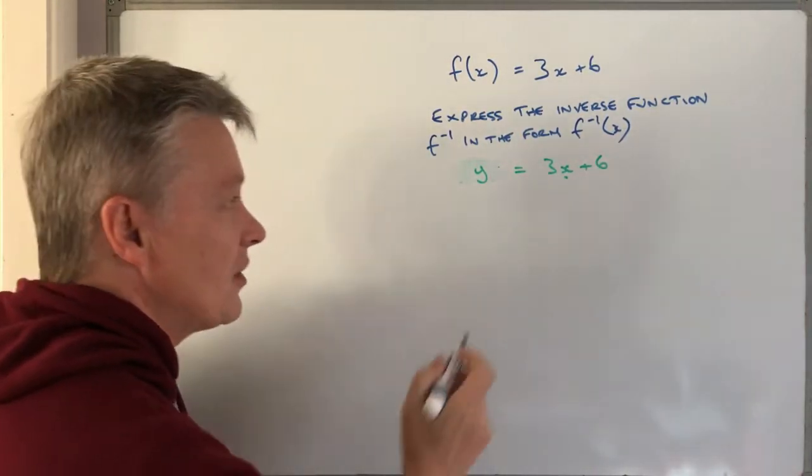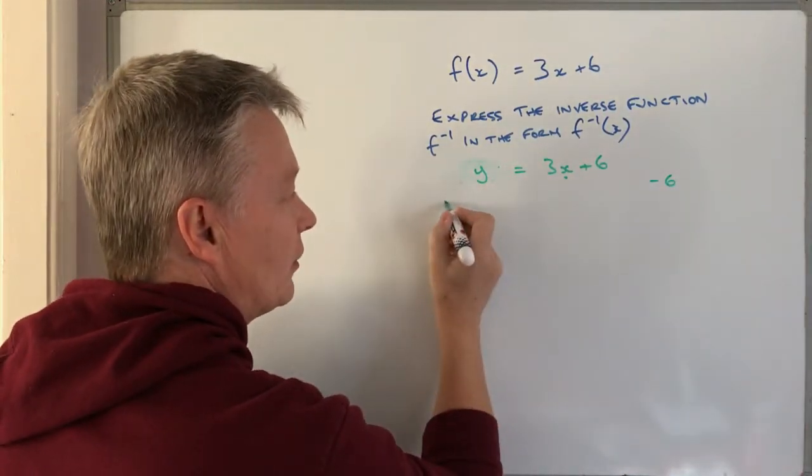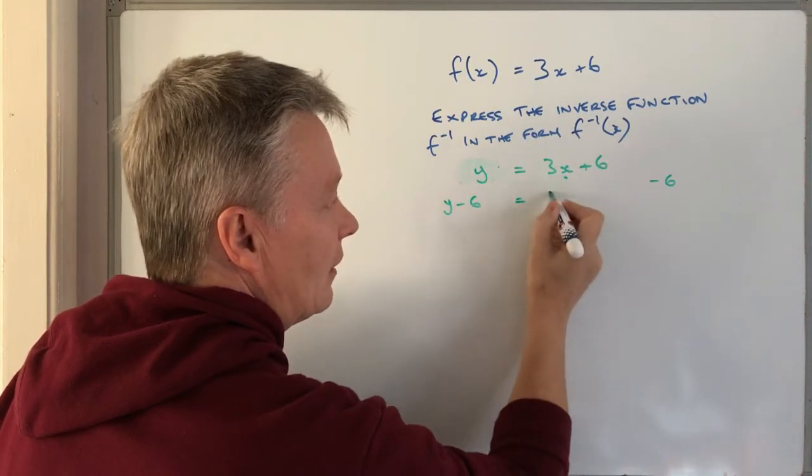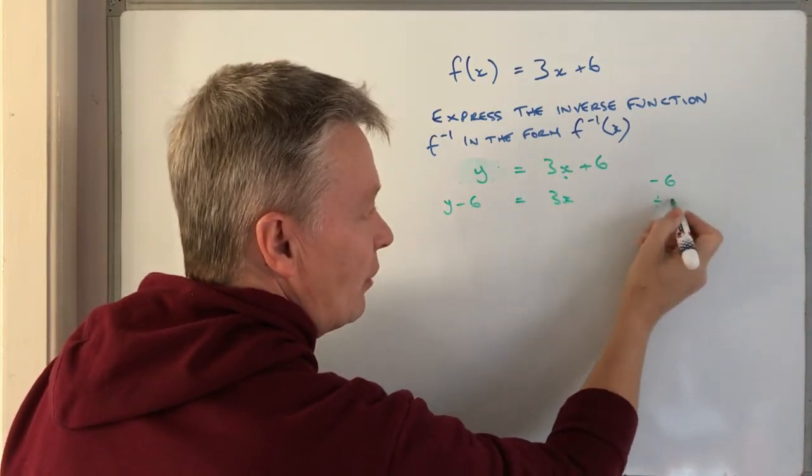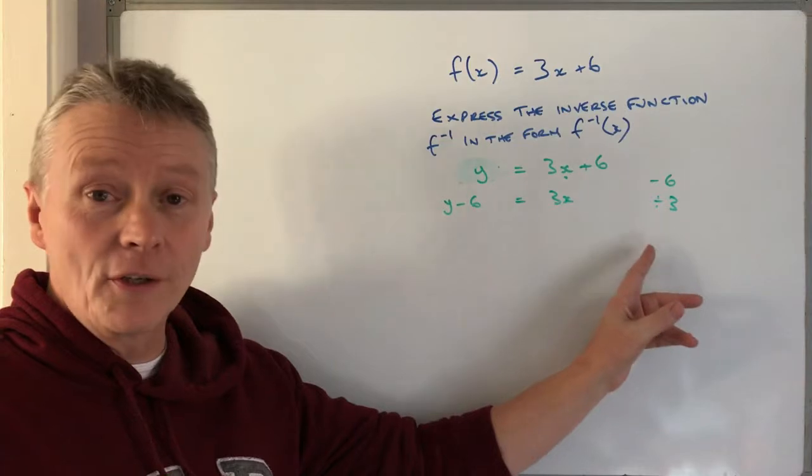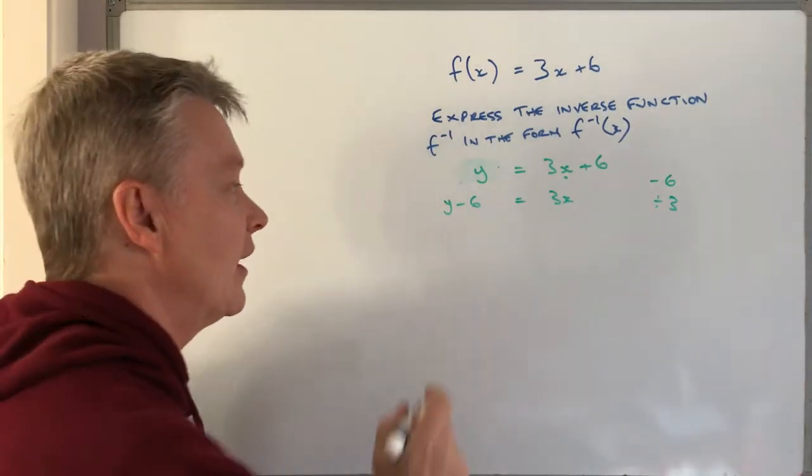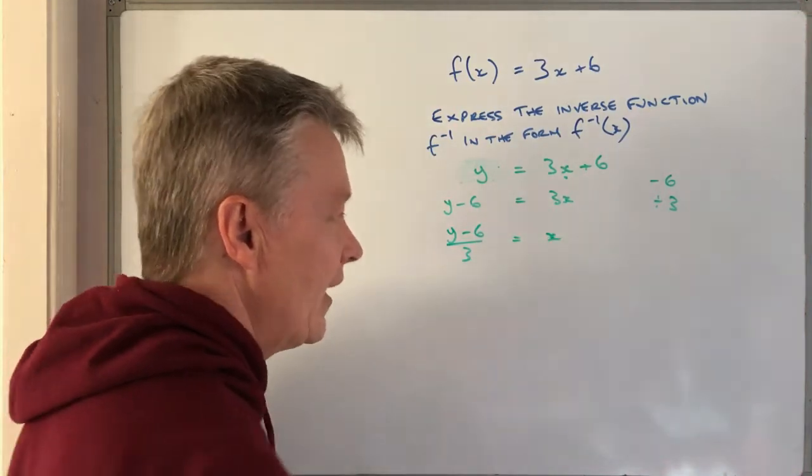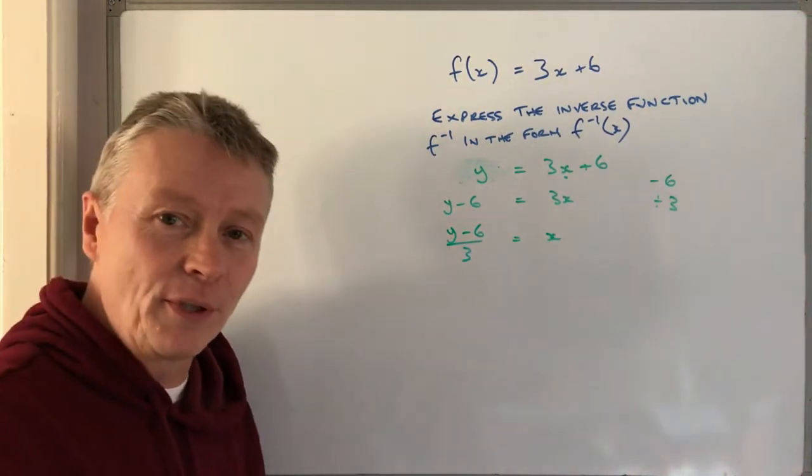So I'm going to minus 6 from both sides and that gives me y minus 6, and then I'm going to divide by 3 because I've got three lots of x. If I divide by 3 it gives me y minus 6 over 3 equals x. That's a quick rearrangement of the formula.